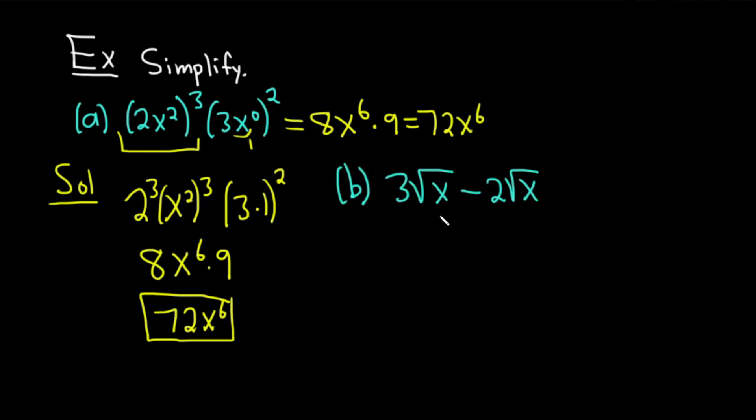Part B. We have 3 times the square root of x minus 2 times the square root of x. Solution. So basically, because we have three square root of x's and we're subtracting two of them, we're going to end up with one left. You basically just subtract the coefficients. So 3 minus 2 is 1 square root of x. But no one leaves their answer like that. They instead write square root of x.